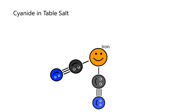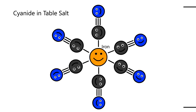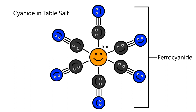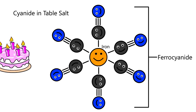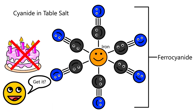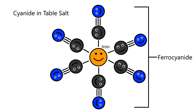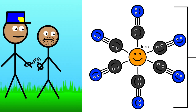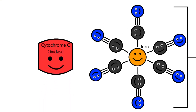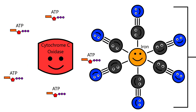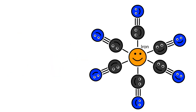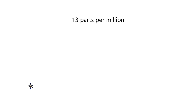In table salt, cyanide is found bound to iron as either sodium ferrocyanide or potassium ferrocyanide. These compounds are used as anti-caking agents to prevent excessive clumping. The bonds between iron and cyanide in ferrocyanide are very strong — kind of like handcuffs. Therefore, even if you ingest these anti-caking agents, there is no free cyanide released and no harm can be done. Not only are these compounds unreactive, but they are restricted to a small amount — by law, there can only be up to 13 parts per million of these anti-caking agents in table salt.